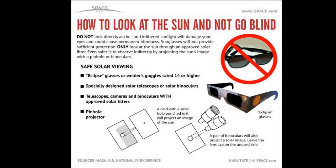During a solar eclipse, it is important not to look directly at the Sun without protection, except during totality. Ordinary sunglasses will not do. For safe viewing of an eclipse, you can use eclipse glasses or welder's goggles rated 14 or higher. You can use specially designed solar telescopes and solar binoculars, or telescopes, cameras, and binoculars with approved solar filters. You can also use pinhole projectors, binoculars as a projector, or telescopes as a projector — these last three are the easiest way to observe a solar eclipse.